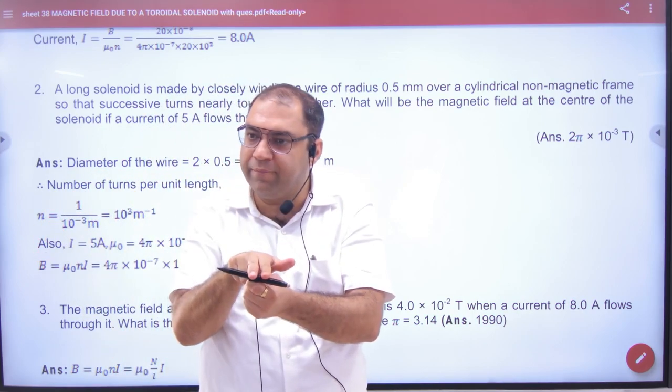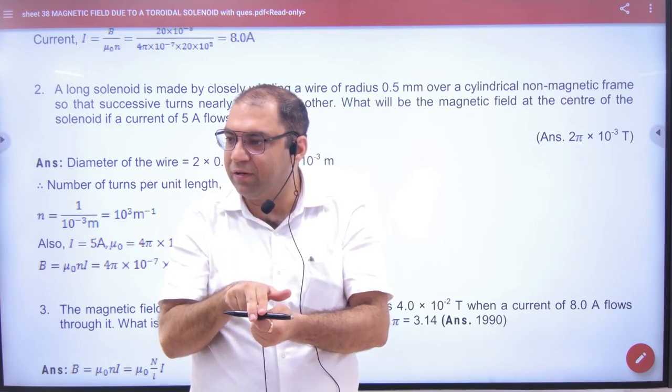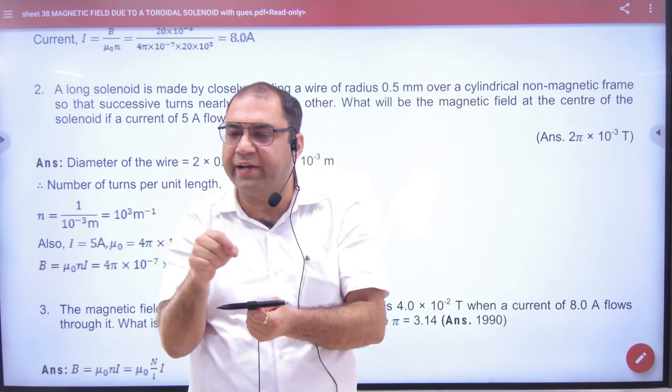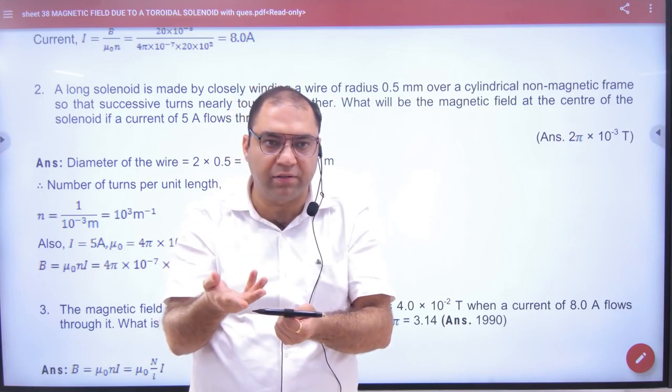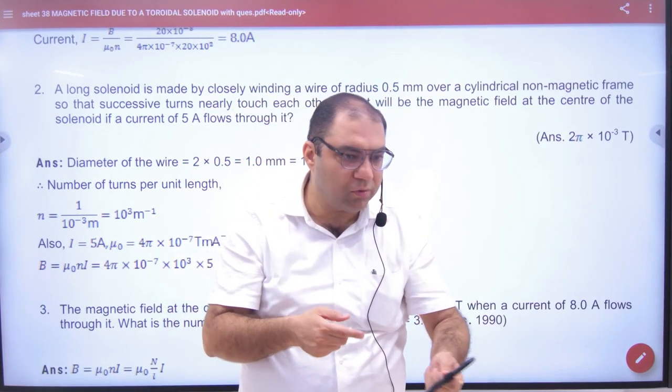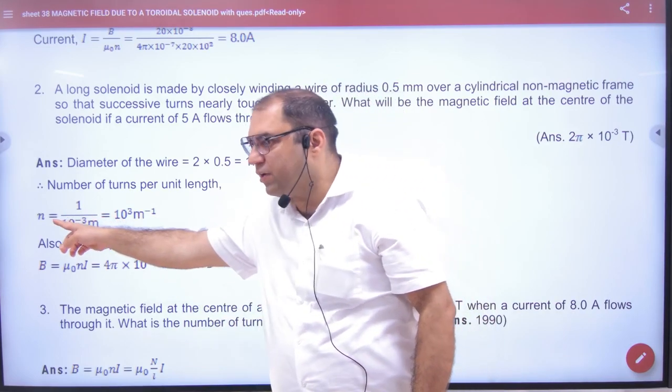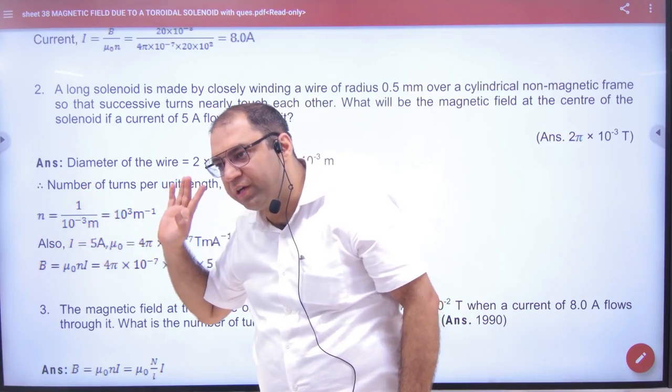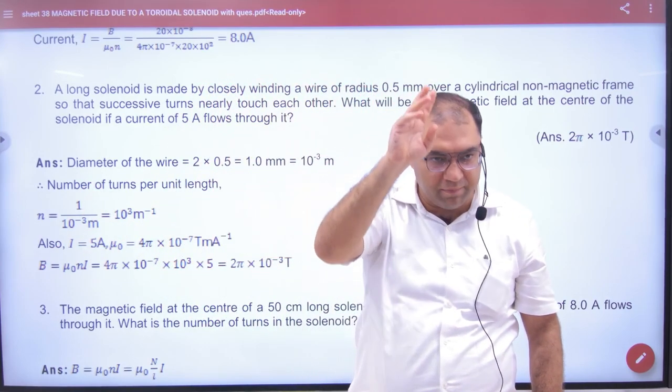The number of turns is n. So what is the number of turns per unit length? N divided by length, which is n divided by d into n. So what will happen? The number of turns per unit length is 1 by d.